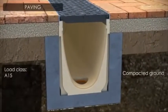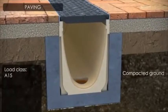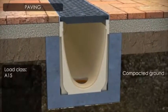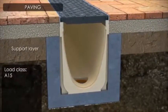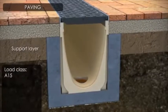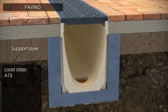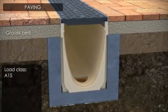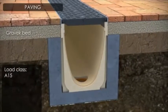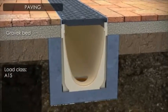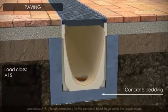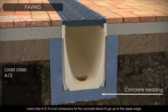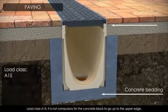With paving, there are three options depending on the load class. For load class A15, it is not compulsory for the concrete bedding to be installed up to the upper edge of the channel.